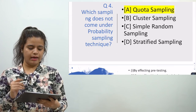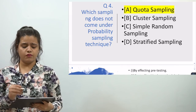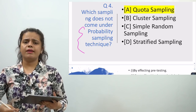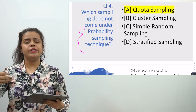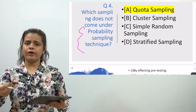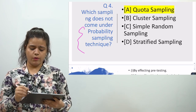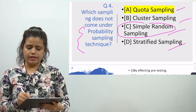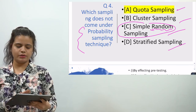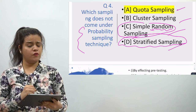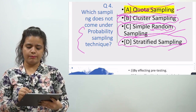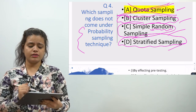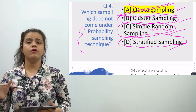The fourth question is: which sampling does not come under probability sampling technique? In probability sampling, every specific unit has a chance of being part of the sample. Looking at the options — quota sampling, cluster sampling, simple random sampling, and stratified sampling — simple random sampling and stratified sampling are part of probability sampling, and cluster sampling is also part of probability sampling. Quota sampling cannot be, because in quota sampling you sample specific things from specific people, making it part of non-probability sampling.